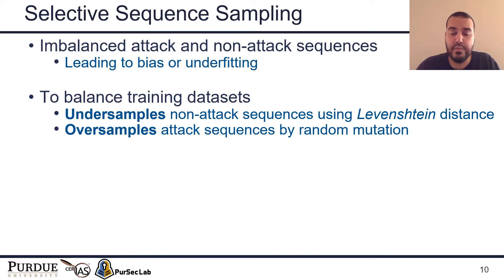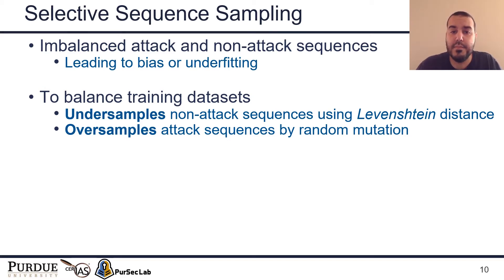Before passing sequences to the training model, the Selective Sequence Sampling component balances the sequences to form a balanced training dataset. Since attack sequences are extremely fewer than non-attack sequences in audit logs, this can lead to an imbalanced dataset where the model becomes biased toward the majority non-attack sequences or is unable to learn the underrepresented attack sequences. In our datasets, on average there are only 61 attack sequences for every 21,000 non-attack sequences. ATLAS undersamples non-attack sequences using similarity metrics (L1 distance) to remove redundant sequences, and oversamples by mutating attack sequences to increase their count, balance the dataset, and introduce new unseen attack sequences.